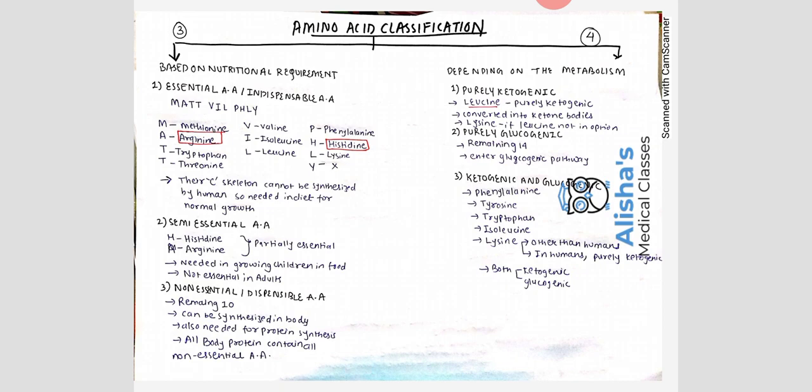The remaining 10 amino acids are non-essential — they can be synthesized in the body. All non-essential amino acids are still needed for protein synthesis, as all body proteins contain them, but since they can be synthesized internally, they are not required from the diet.